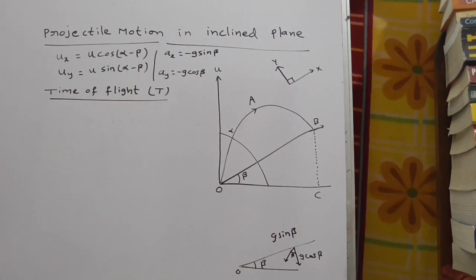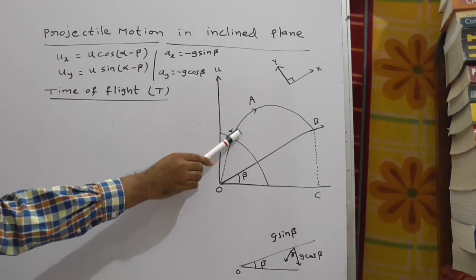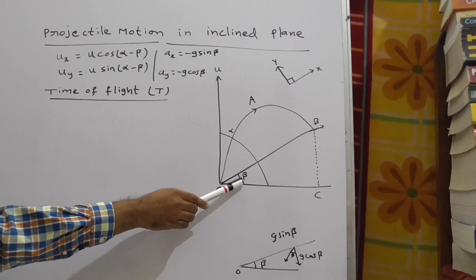Now observe the cases here. This whole angle is alpha, here it is beta.